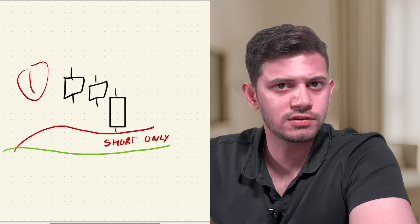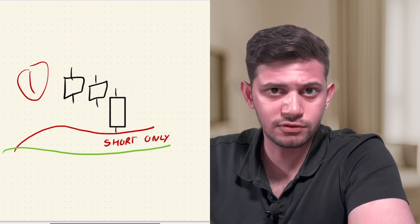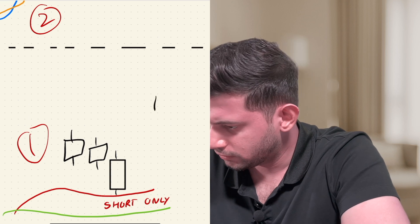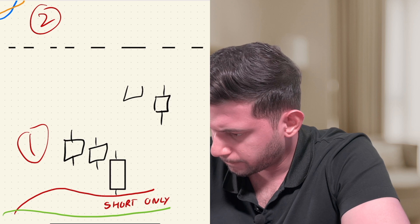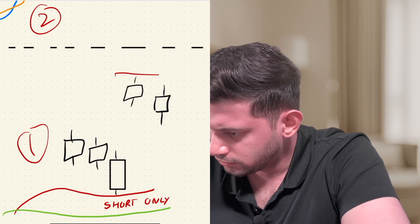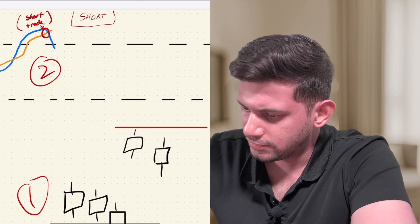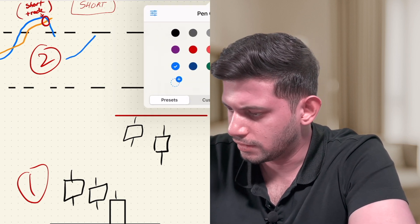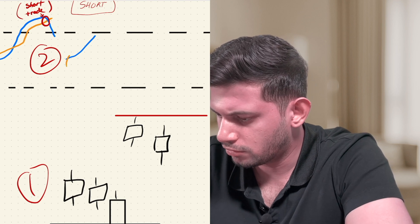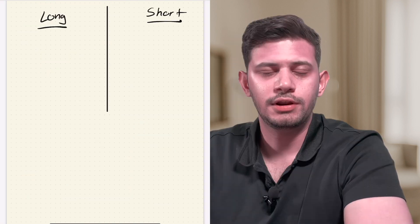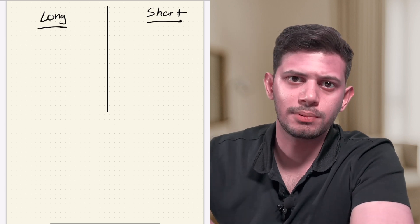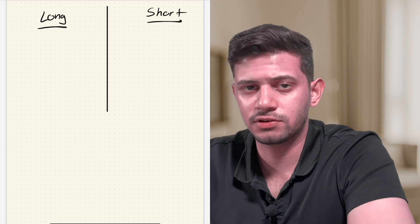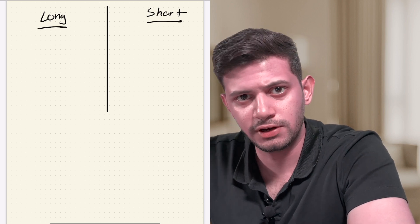For the short trade, the first stop loss condition is the high of the previous candle from the entry candle. So if this is the entry candle and this is the previous candle, the high of that previous candle is your stop loss. The second stop loss condition is when the blue line in the stochastic crosses back above the orange line. So we have two stop loss conditions for both long and short: the high or low of the previous candle, plus the stochastic crossover.